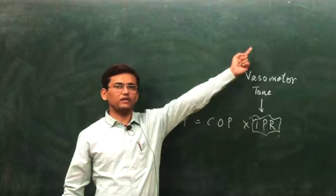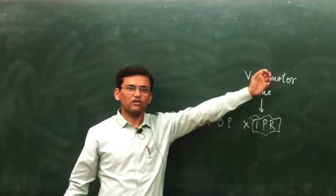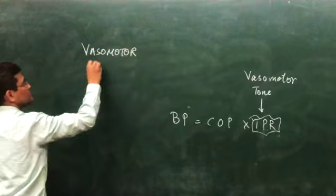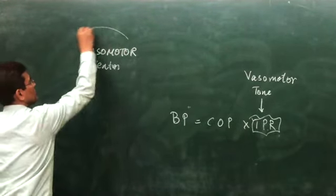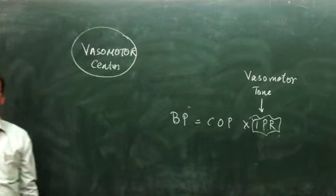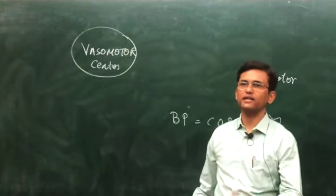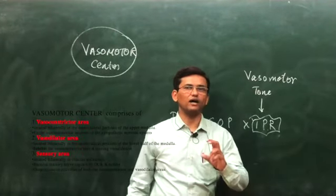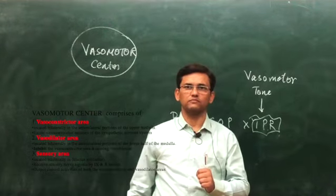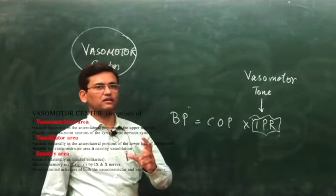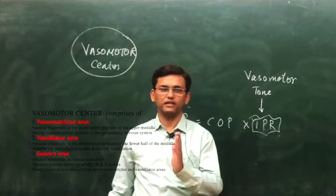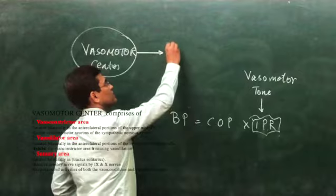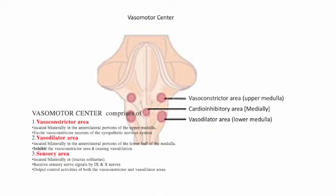This vasomotor tone is sent by a center called the vasomotor center. The vasomotor center is located in the medulla and pons, primarily in the medulla. It has a lateral part and a medial part. The lateral upper medulla has a vasoconstrictor area which sends sympathetic activity signals down the sympathetic chain to the entire vascular structure.